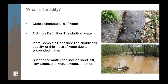We'll start with the most important question: what exactly is turbidity? It's an optical characteristic. A simple definition is that turbidity is just the clarity of the water — whether you can see to the bottom of a water body or not. More completely, turbidity is the cloudiness, opacity, or visual thickness of water due to suspended matter.